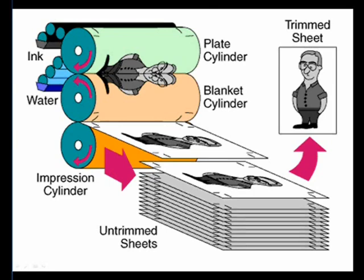The ink is then transferred to an intermediate cylinder, called the blanket cylinder. The blanket cylinder is forced against the paper, thus transferring the image.